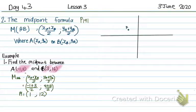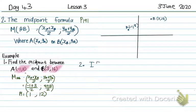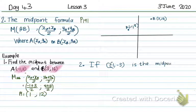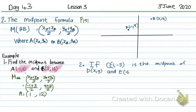If I look at that on a Cartesian plane, A and B and halfway between will be M. Then number 2: if C(-1, -5) is the midpoint between D(x, y) and E(-6, 3), determine x and y.